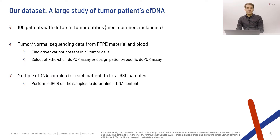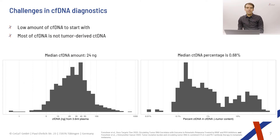What we saw in this data already highlighted the two challenges associated with liquid biopsies. One is that you do not have a lot of cell-free DNA — about 24 nanograms median in our cohort. And most of this cell-free DNA is not even tumor-derived; less than 1% in our cohort, even though these were tumor patients. Additionally, digital droplet PCR only allows us to look at one variant at a time, so we wanted to work with a next-generation sequencing approach to look at multiple variants de novo.